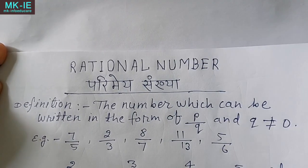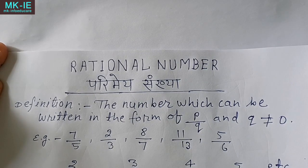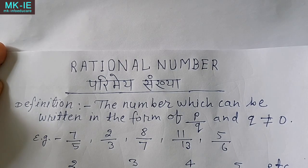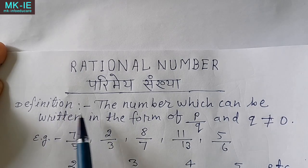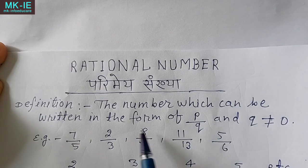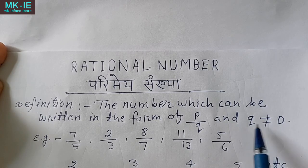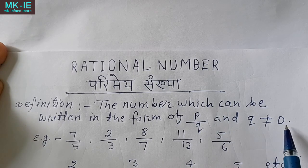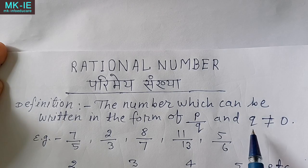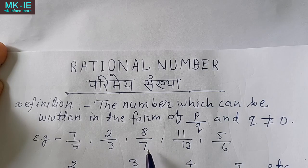Hello everyone. In this video, we will learn about rational numbers. First, we start from the definition of rational number. The number which can be written in the form of p by q, where q is not equal to zero, is called a rational number. वैसी संख्या जो p by q के form में लिखी जा सकती है और q, 0 के बराबर नहीं हो, तो ऐसी संख्या को हम rational number कहते हैं। For example, 7/5, 2/3, 8/7.